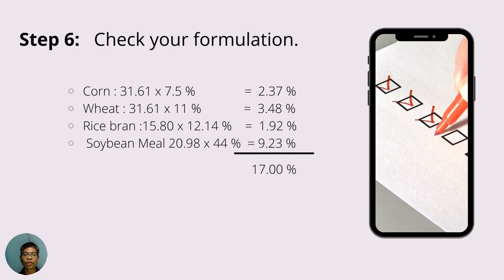Once you get the CP content of each ingredient that goes into the formula, just sum it up and you'll get 17% CP. So that's it. We have checked that we have made the right formulation. We satisfied the requirement.